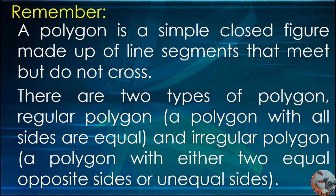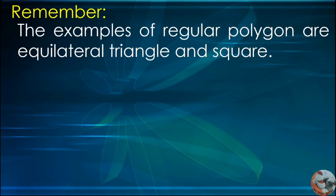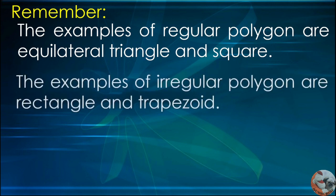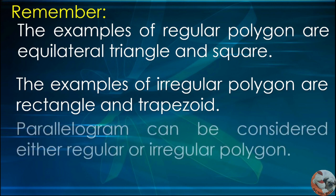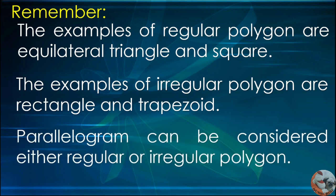There are two types of polygon. Regular polygon: a polygon with all sides are equal. And irregular polygon: a polygon with either two equal opposite sides or unequal sides. The examples of regular polygon are equilateral triangle and square. The examples of irregular polygon are rectangle and trapezoid. Parallelogram can be considered either regular or irregular polygon.